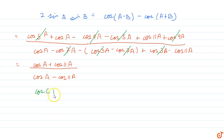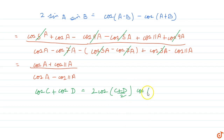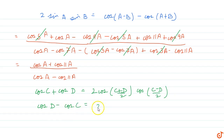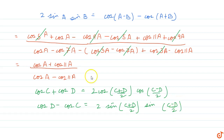Now we use the sum-to-product formulas: cos(C) + cos(D) = 2·cos((C+D)/2)·cos((C-D)/2), and cos(D) - cos(C) = 2·sin((C+D)/2)·sin((C-D)/2). Applying these formulas to the numerator and denominator with C = a and D = 11a gives us the next step.